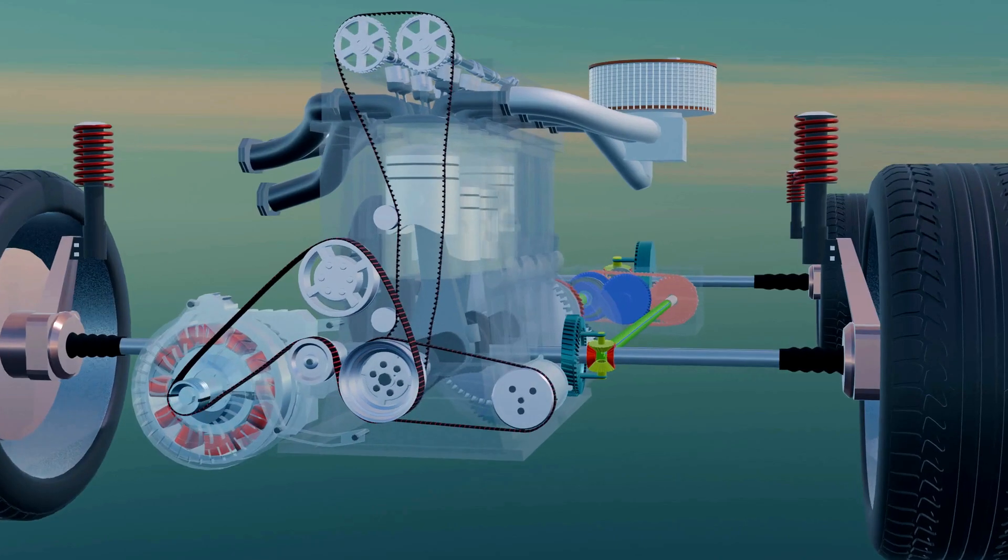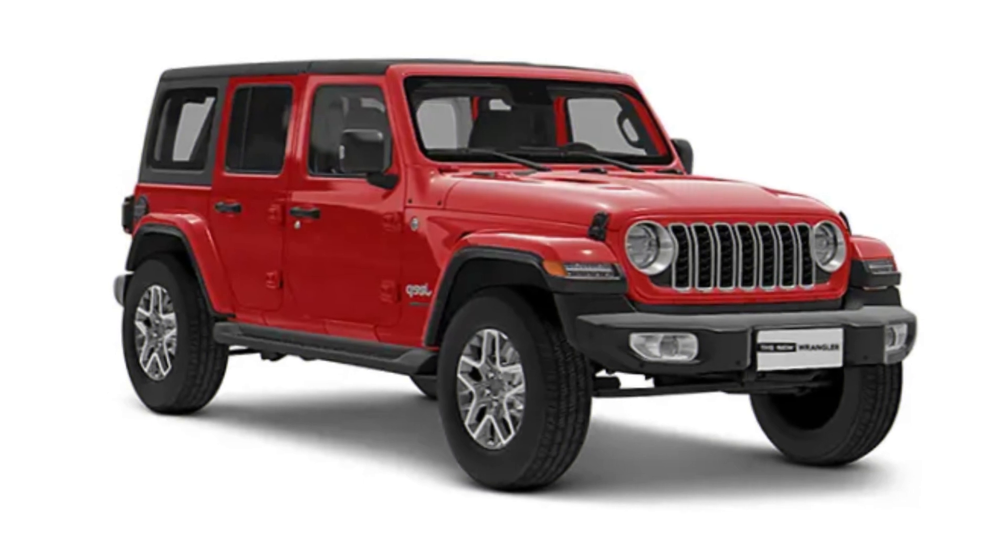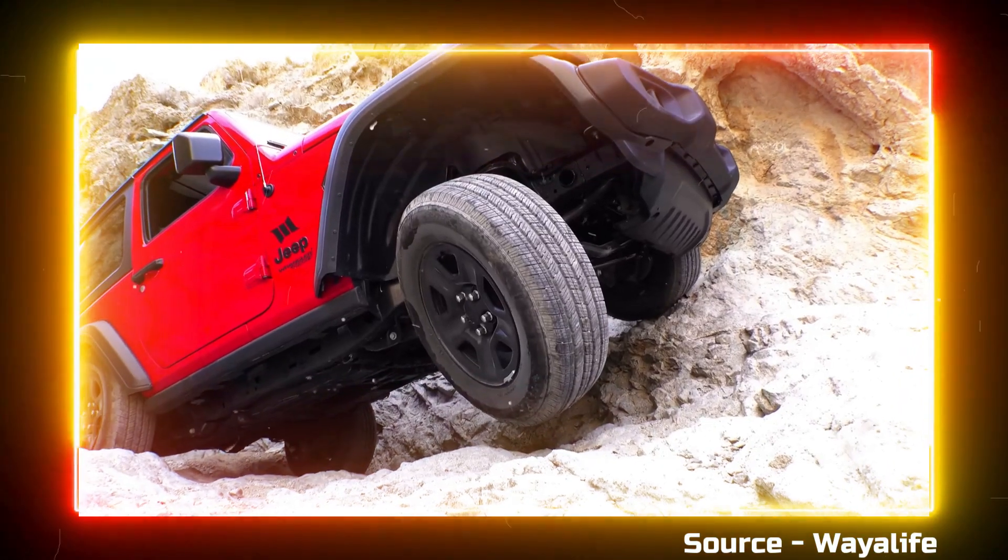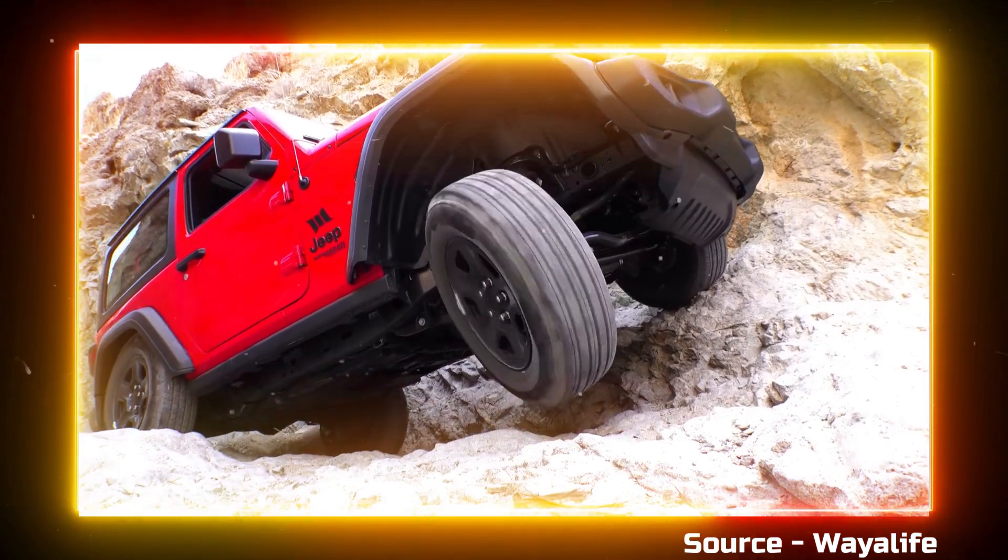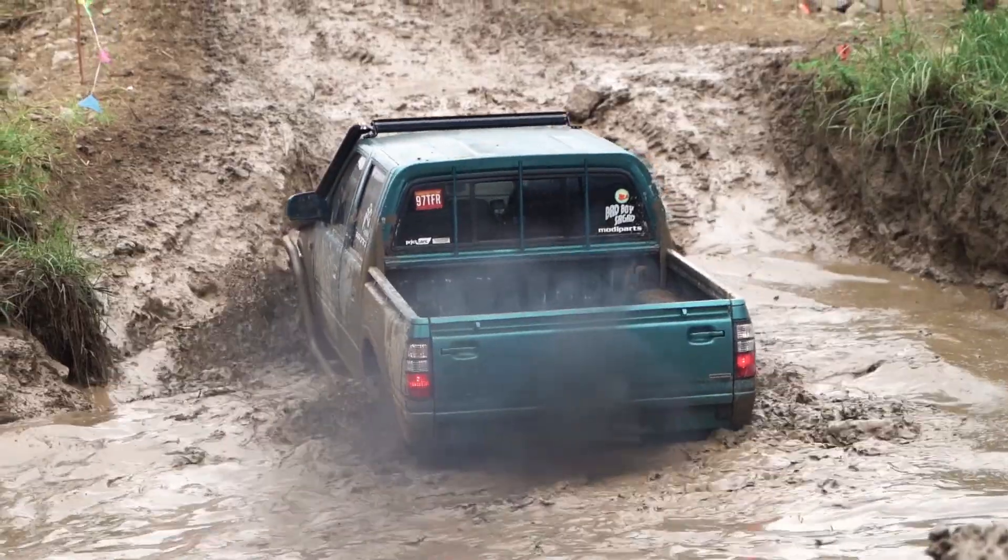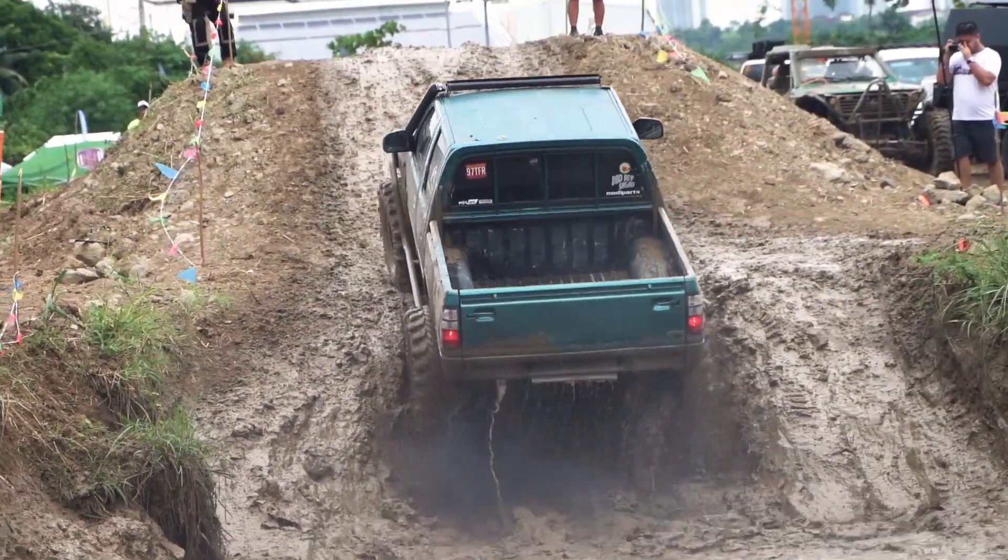This same basic 4x4 system is found in many entry-level off-road vehicles such as the Jeep Wrangler Sport or older Toyota 4Runner models. But this setup does come with limitations. In vehicles like these, it's recommended to use 4H and 4L modes only during off-road driving, not on regular tarmac, and here's why.